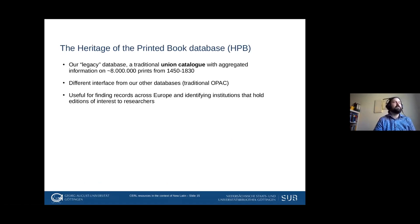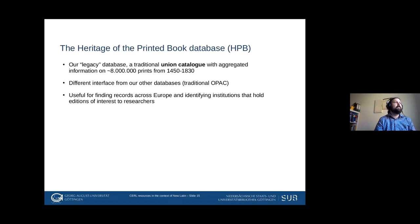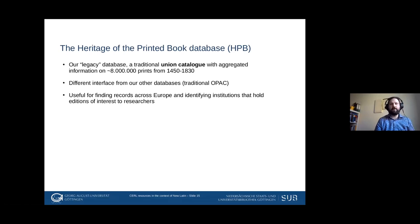The HPB is a traditional union catalog with aggregated information on roughly eight million prints from our time span of interest. We collect entries from library catalogs all across Europe and North America from our member libraries and other suppliers, and bring them all together in one enormous database without doing much work on the records themselves — it's really just an aggregation. Because it's an older project, it also has a different interface — a traditional library OPAC. This is what it looks like.